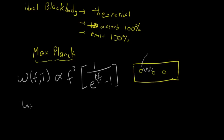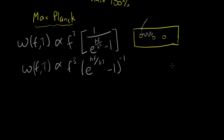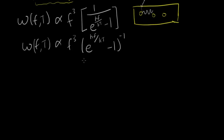This is commonly written as f cubed over e to the power of hf over kT minus one, to the negative one — which is exactly the same thing. From this equation, what you need to know is that as the frequency of the light wave approaches zero, the exponent hf over kT approaches zero as well.